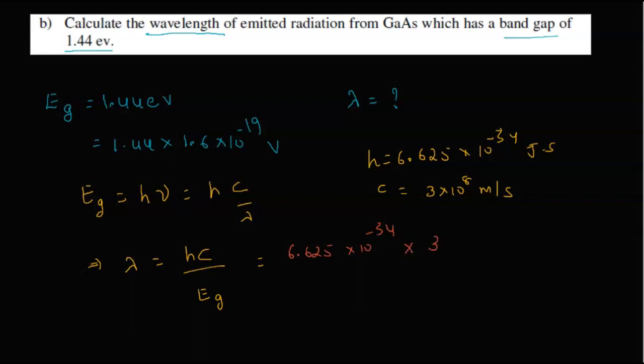So h equals 6.625 into 10 power minus 34 into c, the velocity of light, that is 3 into 10 power 8, whole divided by energy band gap, 1.44 into 1.6 into 10 power minus 19. By using our calculator, if you simplify this, we will get the answer that is 8633 into 10 power minus 8.